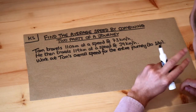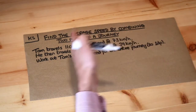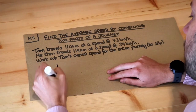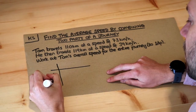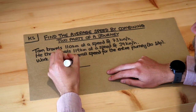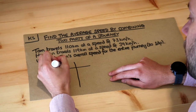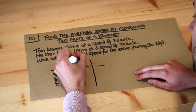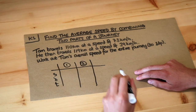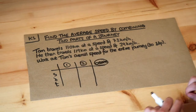Whenever you want to combine speeds from different parts of a journey, or even combining densities for two different objects, you can use a table. I put speed, distance, and time as the three rows, and then the different columns represent different parts of the journey. The first column is for the first part, the second for the second part, and the third column is for the overall journey. Let's put in the information we know already.